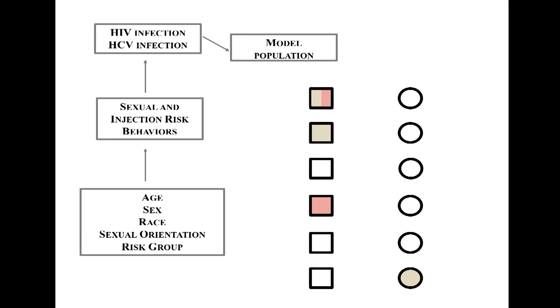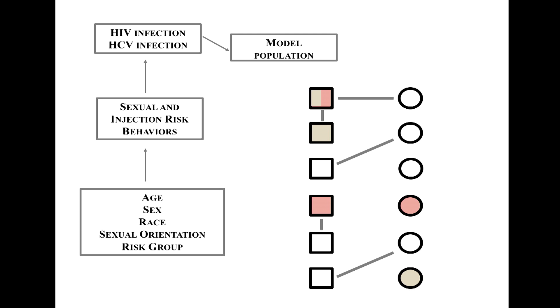Let's say we have a group of men and a group of women in the model, with two different colors denoting HIV or HCV. Partnerships form between people within the model, and given the infected partner's current state — the stage of disease or whether they're on treatment — there's some probability that they could transmit to their partner. In a given month, a transmission event might occur; over time certain relationships dissolve, others form, and new networks emerge. This is the underlying mechanism by which we track the dynamics of disease transmission.